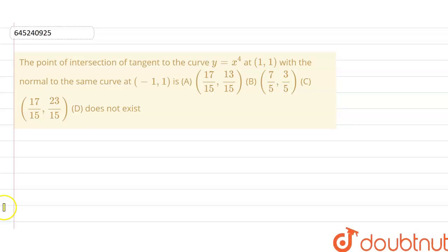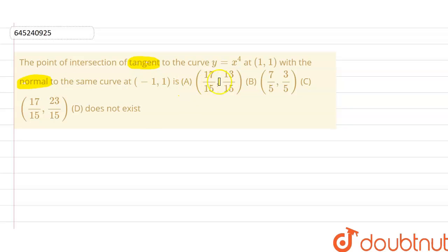Hello friend. Here we have a question: find the point of intersection of the tangent to the curve at (1, 1) with the normal to the same curve at (-1, 1). So we have to find that point of intersection.